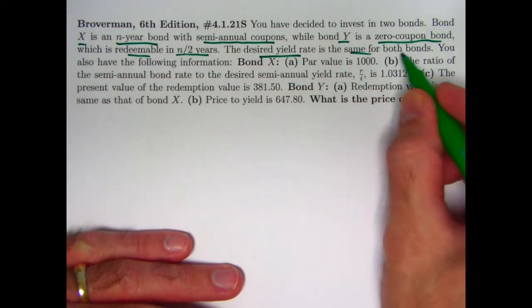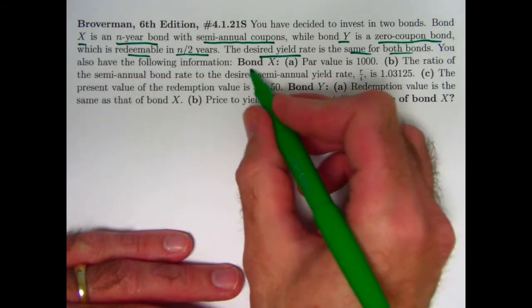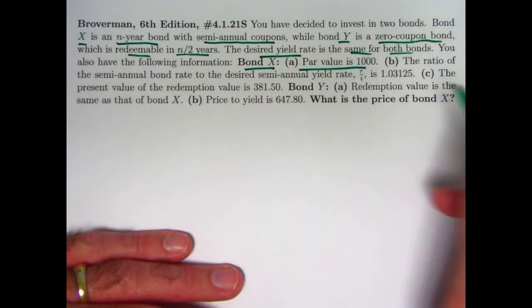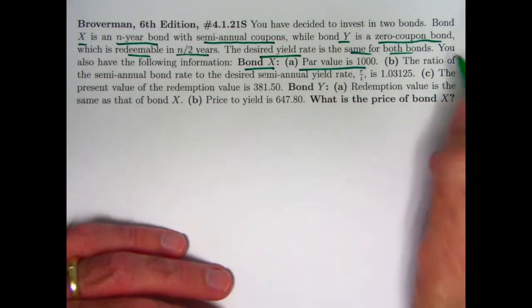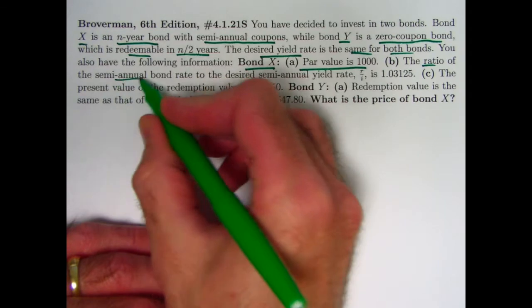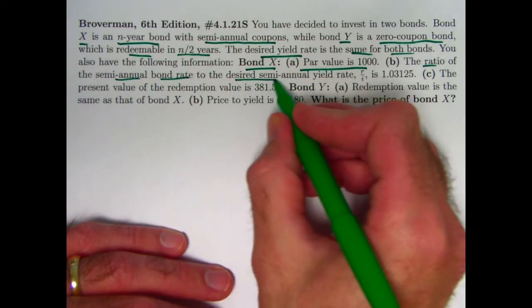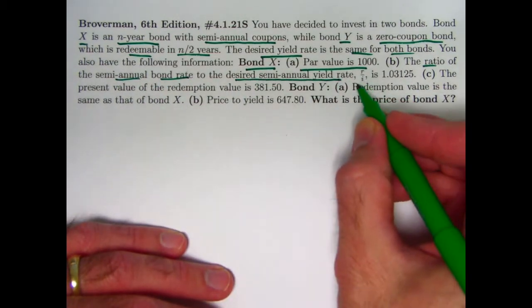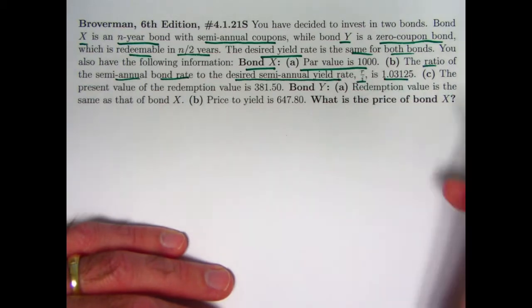The desired yield rate is the same for both bonds. You also have more information. For bond X, the par value is 1000, same as the face value. The ratio of the semi-annual bond rate, call it R, to the desired semi-annual yield rate, call it I, R over I is 1.03125.